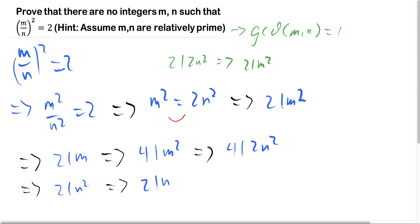So therefore 2 divides n. Now what this implies is that since we have 2 divides m here, and 2 divides n,